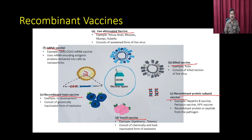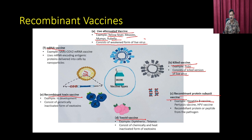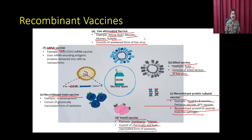Examples include live attenuated vaccines against yellow fever, measles, mumps and rubella (consisting of weakened live virus); killed vaccines against polio; recombinant protein subunit vaccines against hepatitis B, pertussis and HPV; toxoid vaccines against diphtheria and tetanus (chemically and heat inactivated exotoxins); recombinant toxin vaccines still under development; and mRNA vaccines against SARS-COVID, using messenger RNA encoding the antigenic region delivered by nanoparticles.